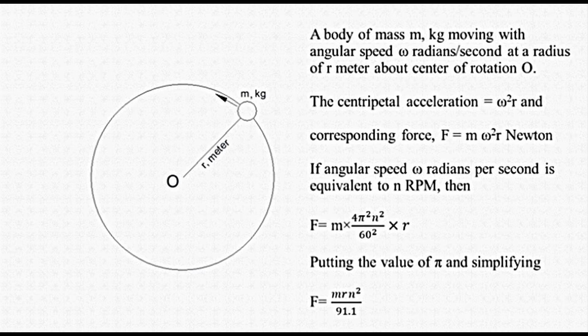I told you F is equal to m into 4 pi squared n squared divided by 60, and not 60 squared, into r — because that was typed by mistake in the slide. The next step was correct, as you can see here: F is equal to m r n squared divided by 91.1. Therefore, the correct expression has 60 squared in the denominator as shown. This was about the previous episode.